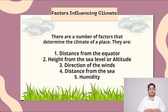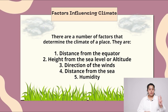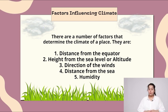Factors influencing climate. There are a number of factors that determine the climate of a place. They are: distance from the equator, height from the sea level or altitude, direction of the wind, distance from the sea, and humidity.